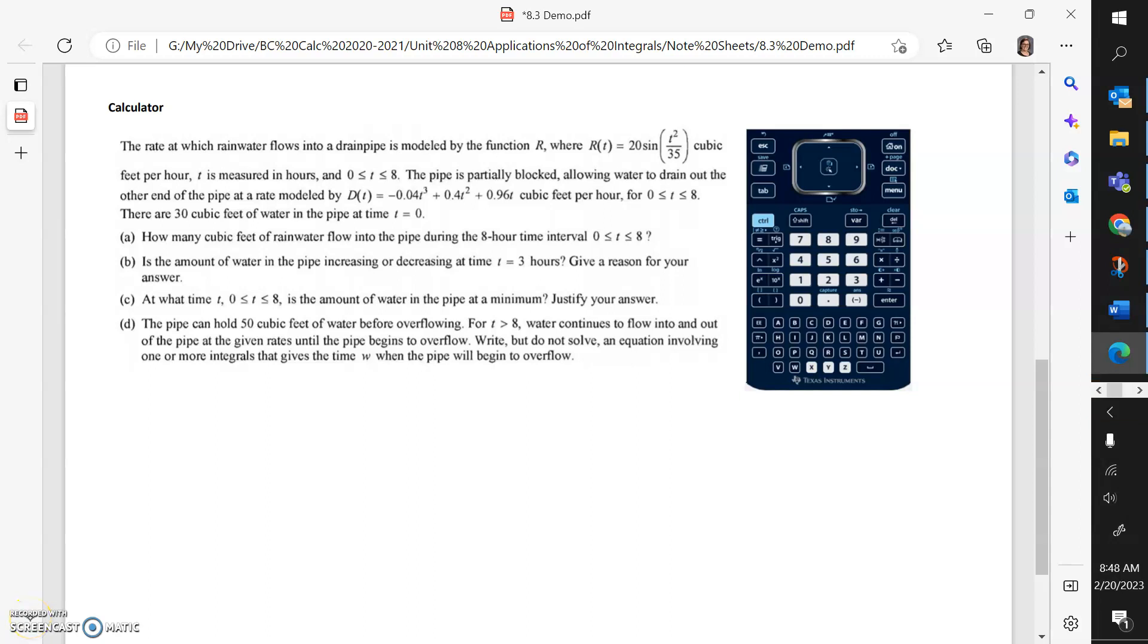The second question from the 8.3 notes is another calculator active AP style question. The rate at which rainwater flows into a drain pipe is modeled by the function R, where R(t) equals 20 sine of t squared over 35.